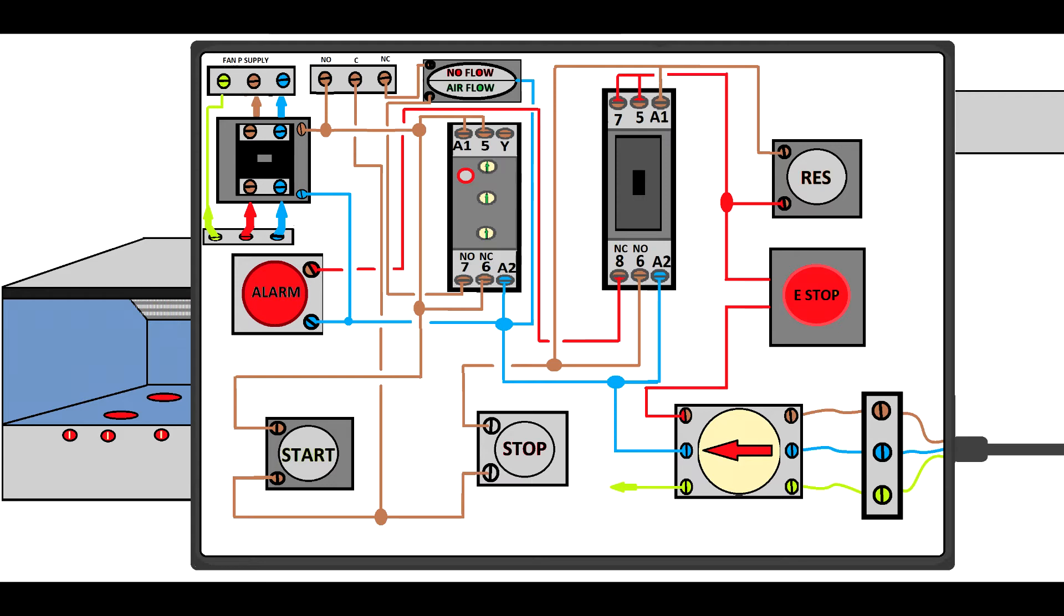Now the power goes to the main inputs into the relay, but the relay is not activated because if you look at the reset switch, there's another wire which is supposed to give power to the A1 of the safety contactor. Once you press that one, the contactor is activated and you'll see a lot of red wires come on. This provides power to the differential pressure switch which is on the top.